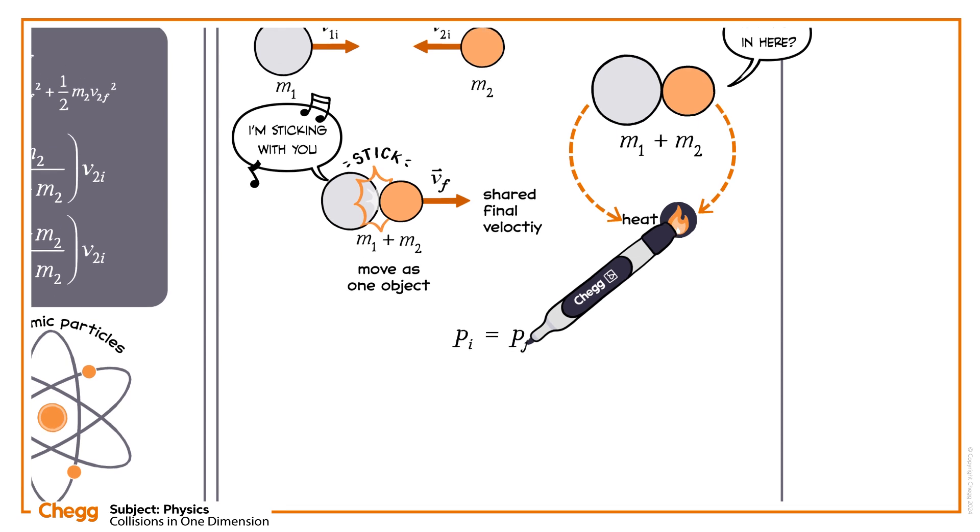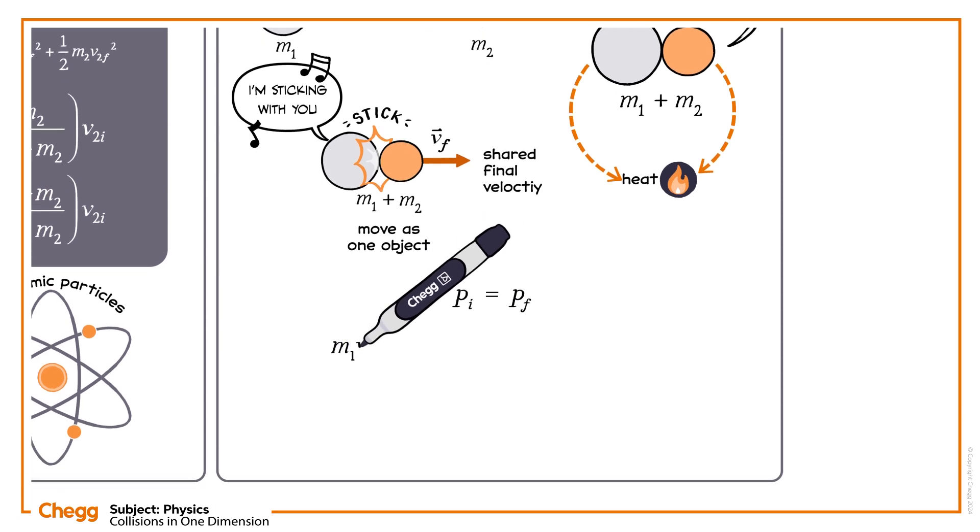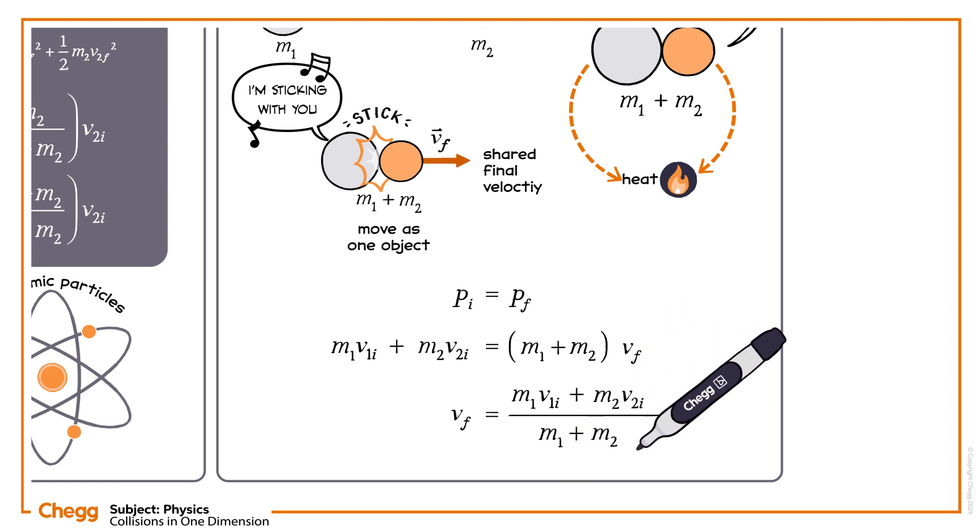We know that the momentum at the beginning, M1 times V1i plus M2 times V2i, is equal to the momentum at the end, M1 plus M2, times by Vf. Rearranging for the final velocity tells us that for a perfectly inelastic collision, Vf equals the sum of mass times velocity for both objects at the beginning, divided by the sum of the two masses. The sign of velocity depends on which direction the particles are moving.